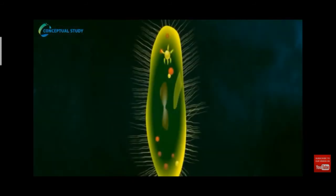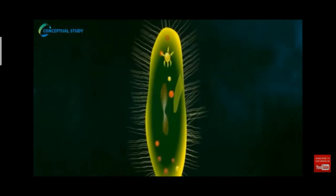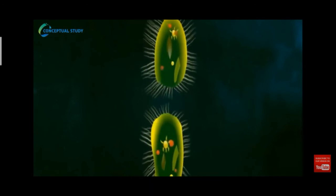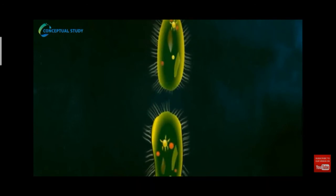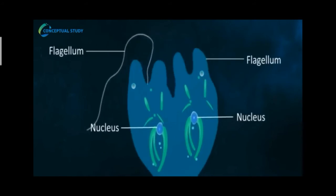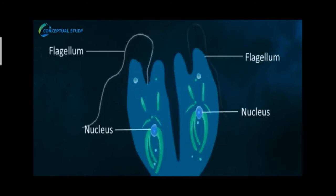Let's see some other examples. Like amoeba, paramecium also divides into two daughter cells by binary fission. Euglena likewise undergoes binary fission and gives rise to two daughter cells.